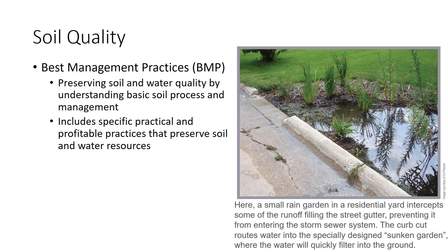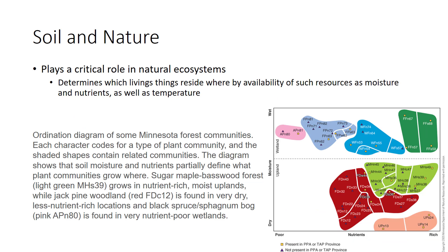A BMP for capturing runoff from residential settings before it can enter lakes or streams is called a rain garden. Soil also plays a critical role in natural ecosystems. Which living things reside where depends on soil and climate, because these two define availability of resources such as proper temperature, moisture, and nutrients. In a local area, water and nutrients — largely controlled by soil — control the nature of plant communities. The figure shows an ordination diagram of wooded communities in Minnesota; each colored patch represents a group of related plant communities, and moisture level and nutrient availability, both strongly influenced by soil, define the axes.